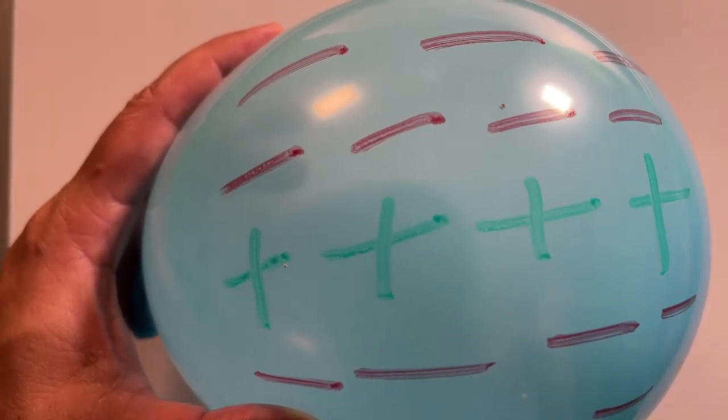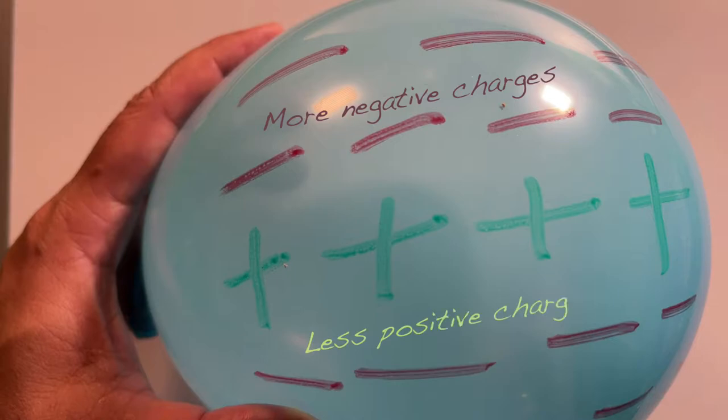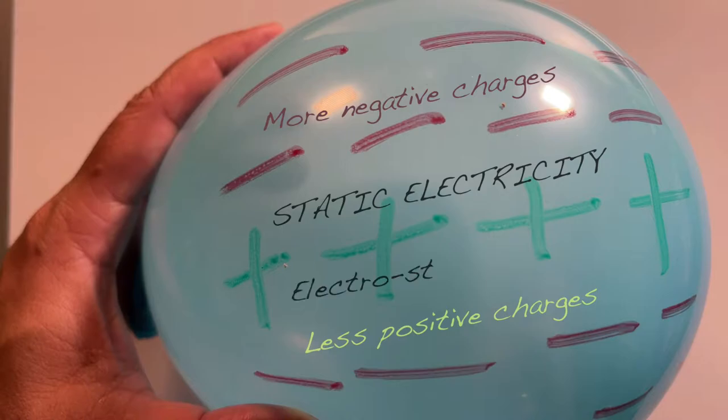When there is an imbalance of negative and positive charges in an object, that is when negative and positive charges in an object are not equal, it results in static electricity. Static electricity is also called electrostatic charge.